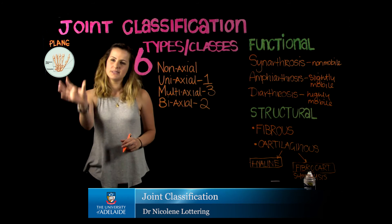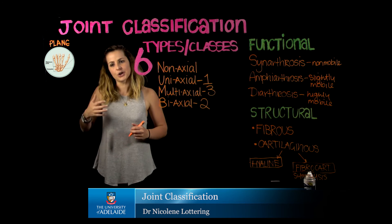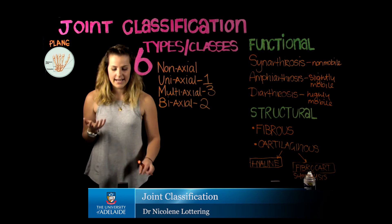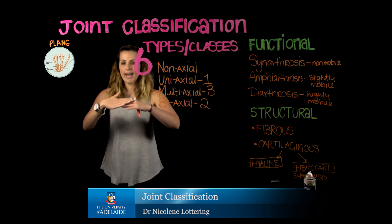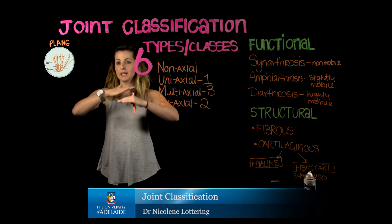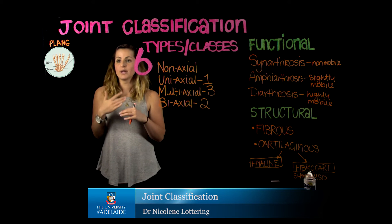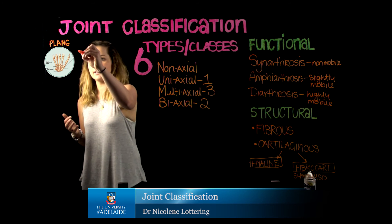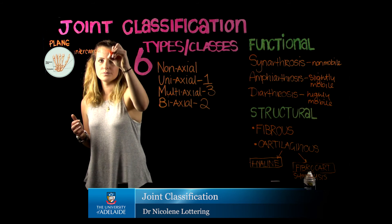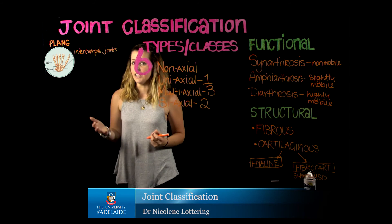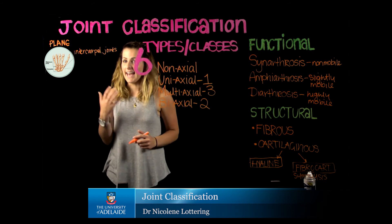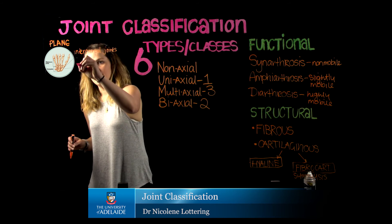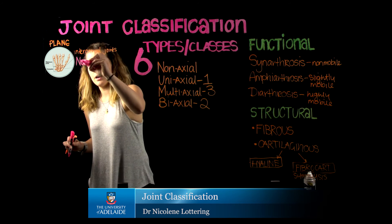When talking about these specific classes, they are representative of the shape of a joint. When talking about a plane or gliding joint, we're talking about when we have two flat surfaces that are essentially rubbing against each other — they're both going to be flat or rectangular. Our plane joints are typically found in the intercarpal joints, and this is going to be the same in the intertarsal joints of the foot. The axis of movement associated with the plane joint is going to be non-axial.